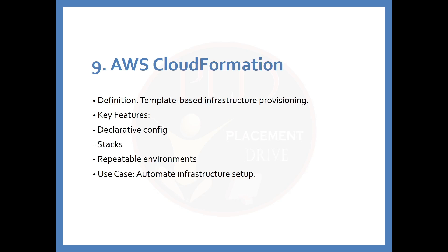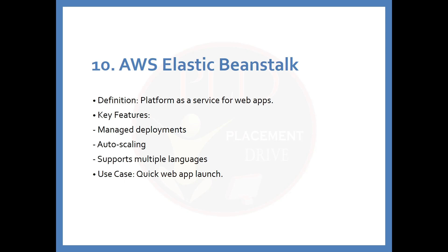The ninth service is AWS CloudFormation. The definition is: template-based infrastructure provisioning. Key features include declarative config, stacks, and repeatable environments. The use case is automating infrastructure setup. The tenth service is AWS Elastic Beanstalk. The definition is: a platform as a service for web applications. Key features include managed deployments, auto scaling support, and multi-language support. The use case is to quickly launch a web app.